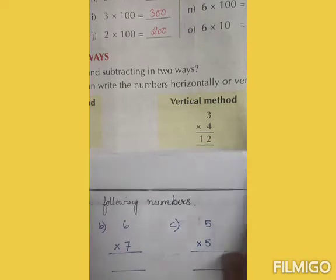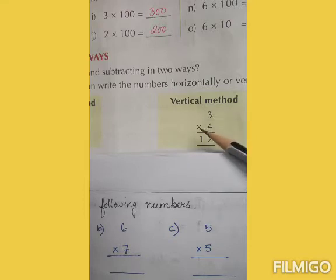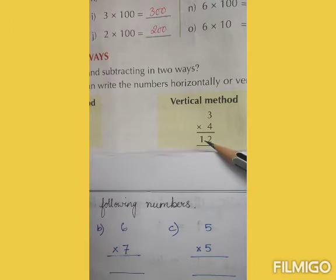The other is the vertical method. In the vertical method, we place the digits vertically and then we multiply. For example, 3 into 4 is equal to 12.